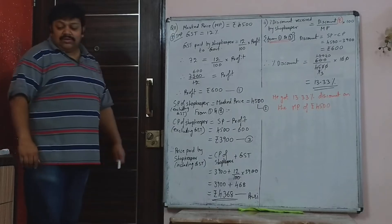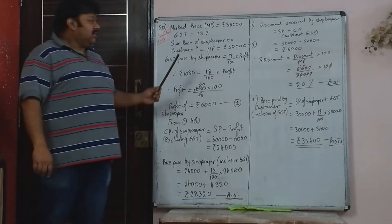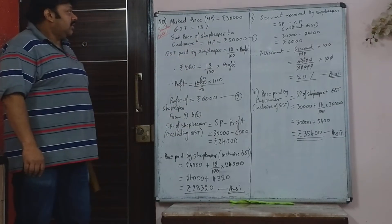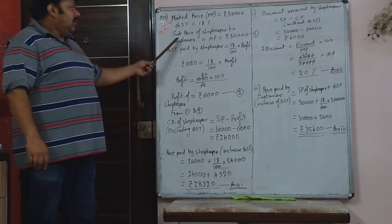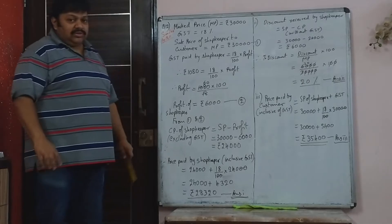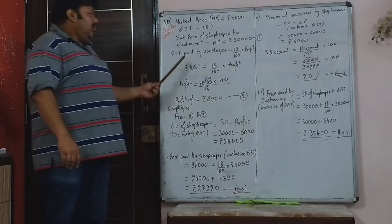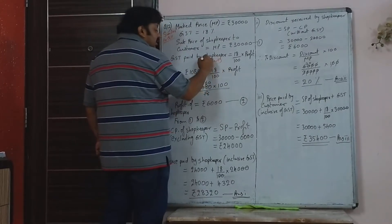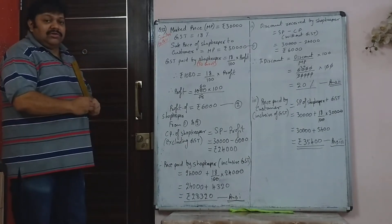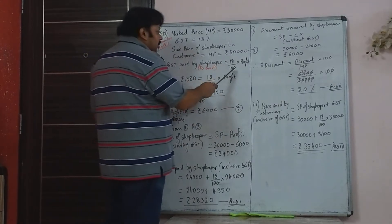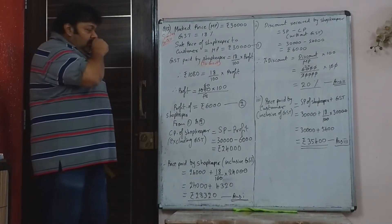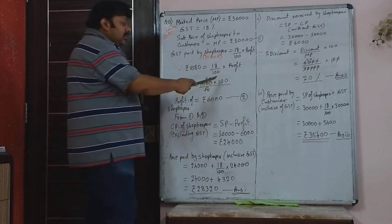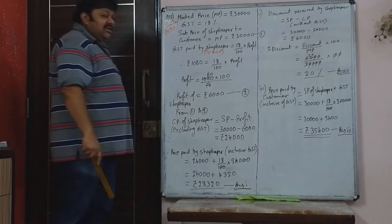We go on to the 12th sum, which is very similar to the previous question — identical sum, just the values have changed. The mark price of an article is Rs. 30,000 and there is a GST of 18%. The sale price of the shopkeeper to the customer is also Rs. 30,000. GST paid by shopkeeper to government is given as Rs. 1,080. He pays 18% of the profit as GST, so profit equals 1080 × 100 ÷ 18, that is Rs. 6,000.